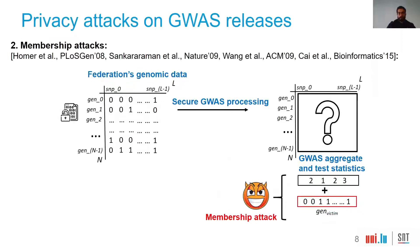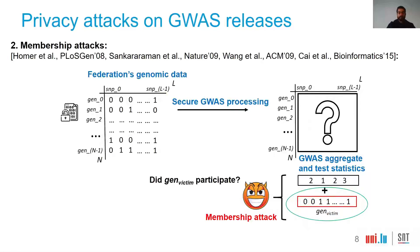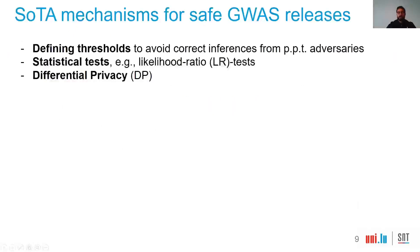On the other hand, in a membership attack, we follow the same pipeline, but now we assume that the adversary has access to the genotype of a victim in addition to the results of the study. The adversary can then run statistical tests in order to determine whether the victim's genotype participated in a study.